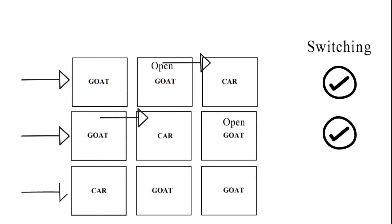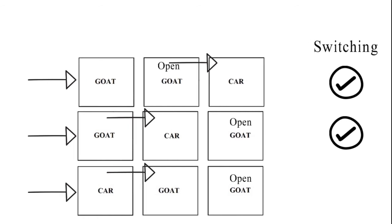In the third case I choose gate number one and the host opens the gate number three and I change and end up with the goat.